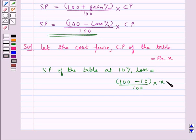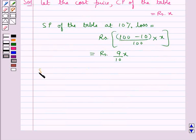So the selling price of the table at 10% loss is equal to (100 minus 10) upon 100 into x, which is equal to 9 upon 10 into x, that is rupees 9x upon 10.